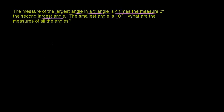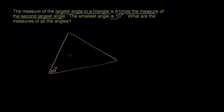We know one of them — we know it's 10 degrees. Let's draw an arbitrary triangle right over here. We know that the smallest angle is going to be 10 degrees, so let's assume this right over here is the measure of the smallest angle: 10 degrees. Now let's call the second largest angle x. So this is going to be x. They say the measure of the largest angle is four times the measure of the second largest angle, so the largest angle is going to be 4x.